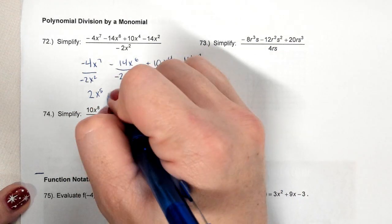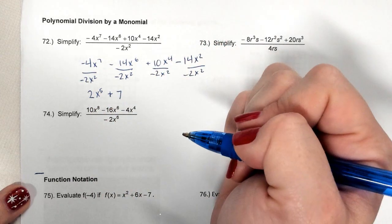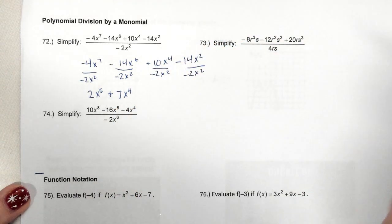Two negatives make a positive. 14 divided by 2 is 7. Remember, we're subtracting our exponents: 6 minus 2 is 4. There were more on top, so I don't need a fraction.